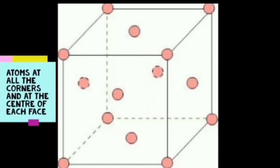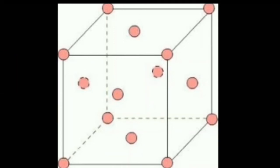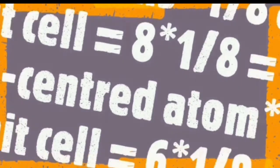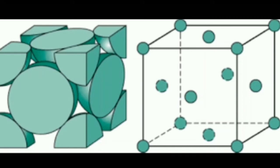Here by presenting a diagram: atoms at all the corners and at the center of each face. 8 corner atoms means 1/8 atom per unit cell equals 8 × 1/8 = 1 atom. 6 faces centered atom means 1/2 atoms per unit cell equals 6 × 1/2 = 3 atoms. Therefore, total number of atoms per unit cell equals 4 atoms. This is a diagram representing the representation of atoms.